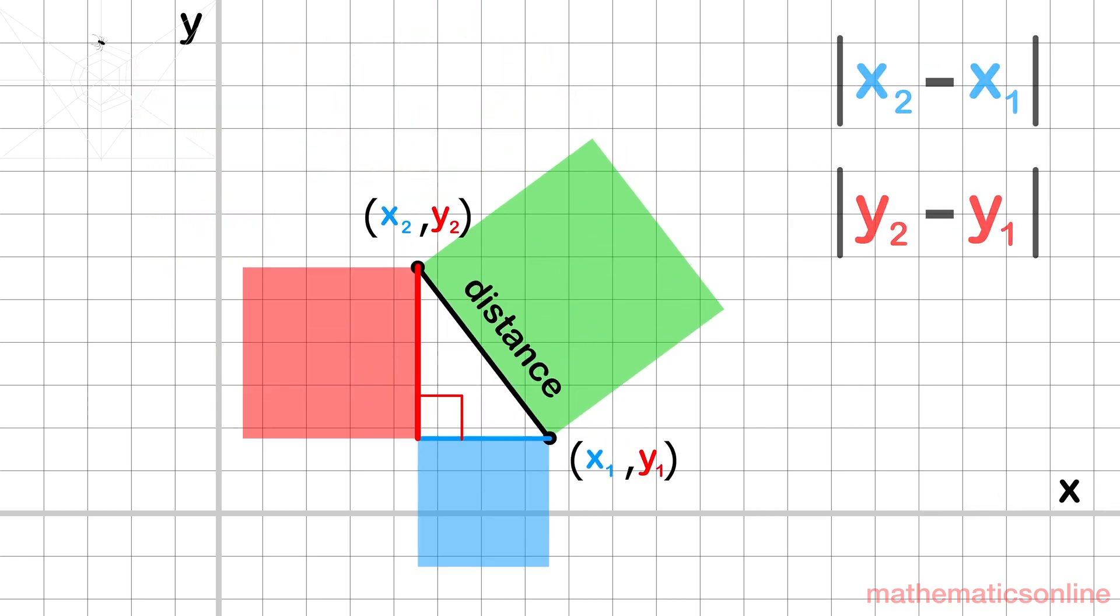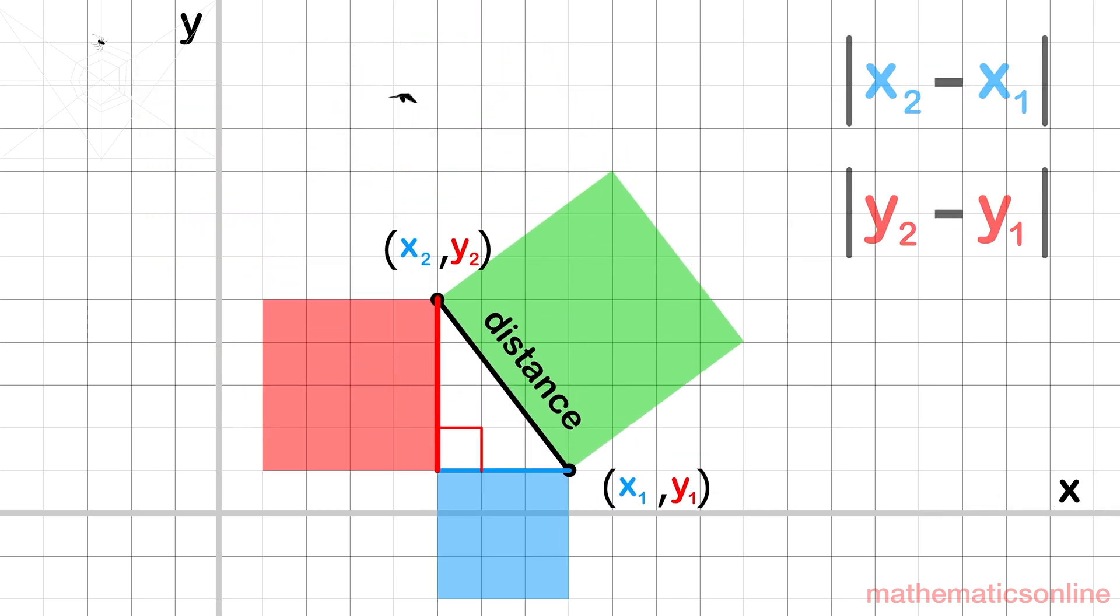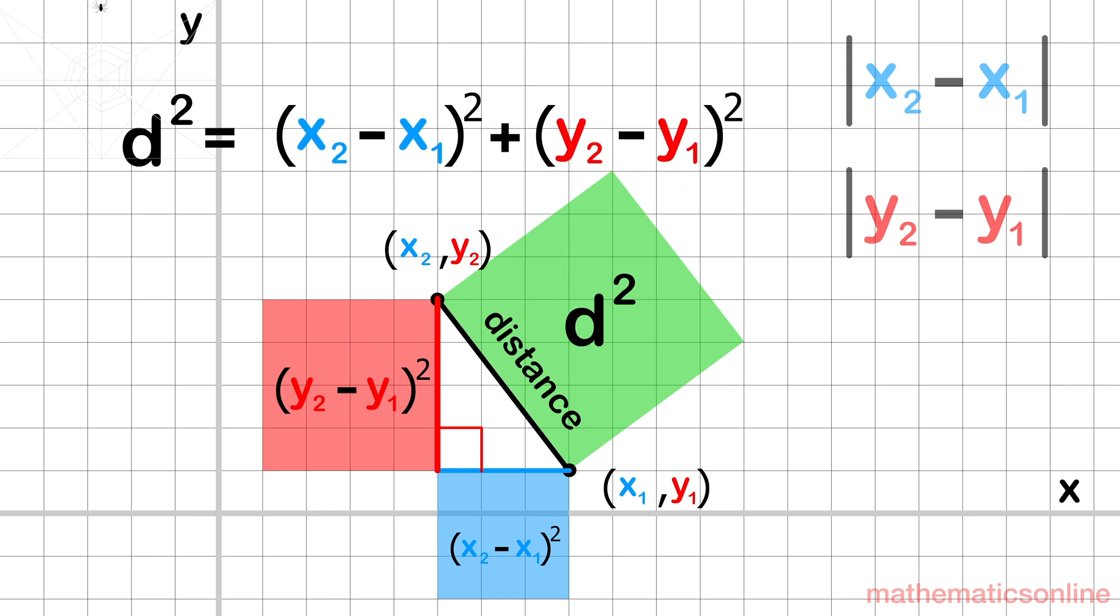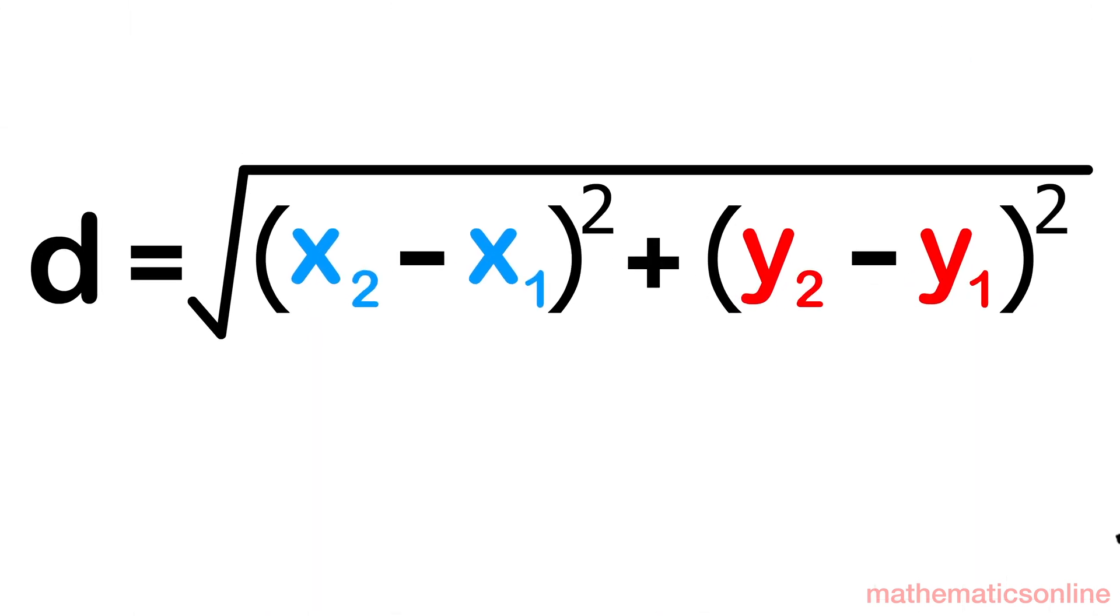For that, we make use of the Pythagorean theorem. Each side becomes squared. So we have the distance squared is equal to x2 minus x1 squared plus y2 minus y1 squared. Taking the square root of both sides gives us the familiar-looking distance formula that we are all so accustomed to.